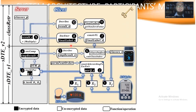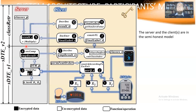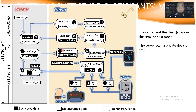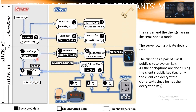The system architecture and participants are the following. We have one or more clients, and the clients have the decryption key. The server has a trained model. Both the server and the client are in the semi-honest model, meaning they follow the protocol but in the background try to infer data they're not supposed to. The server owns a private decision tree, while the client has a pair of somewhat homomorphic encryption public crypto keys. All encryptions are done using the client's public key, meaning only the clients can decrypt ciphertexts. Communication channels are not assumed to be safe.